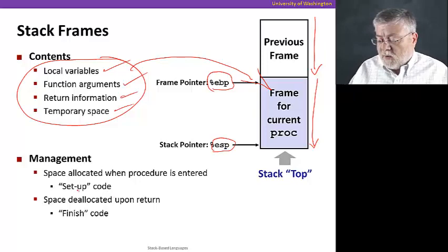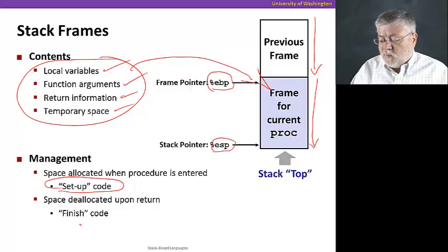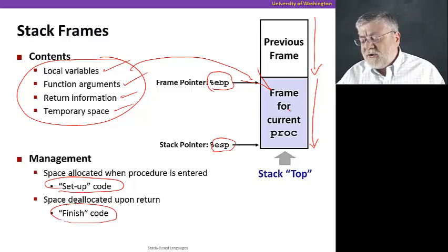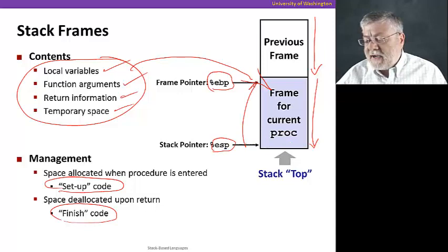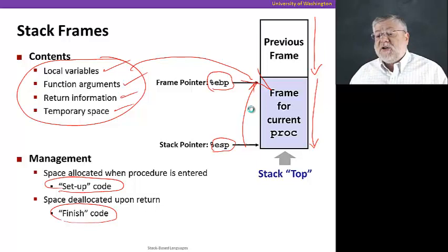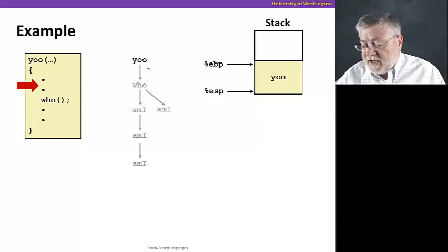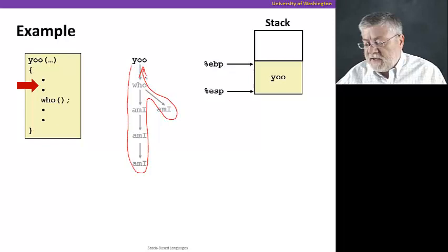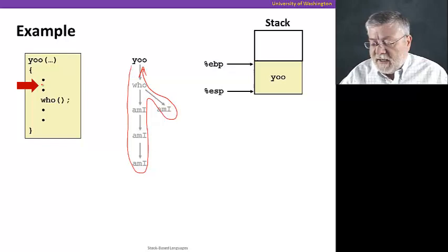So the management then of these frames is such that when a procedure is first entered, we run its setup code that creates the stuff in this frame. And when we return, before we do that, we run some finished code, that sort of cleans up what's in this frame before changing the stack pointer to go back to the previous frame. So again, let's take a look at how our example is going to do this. All right? So here, remember, is our call chain that went through this sequence of things, calls going down, returns coming back up.